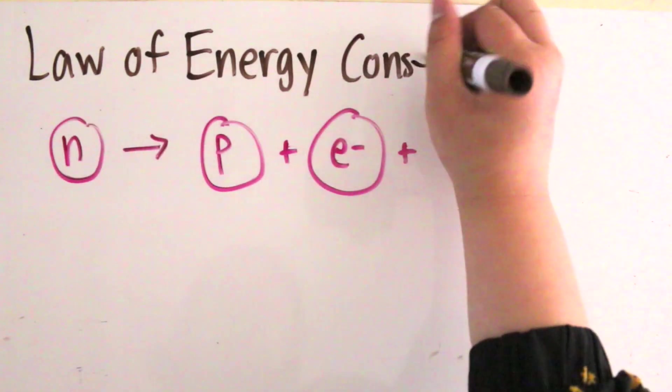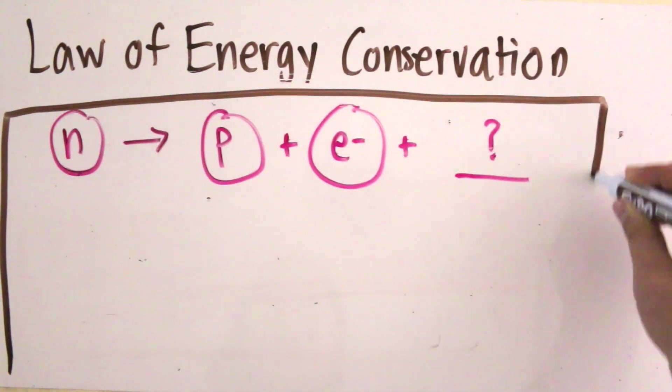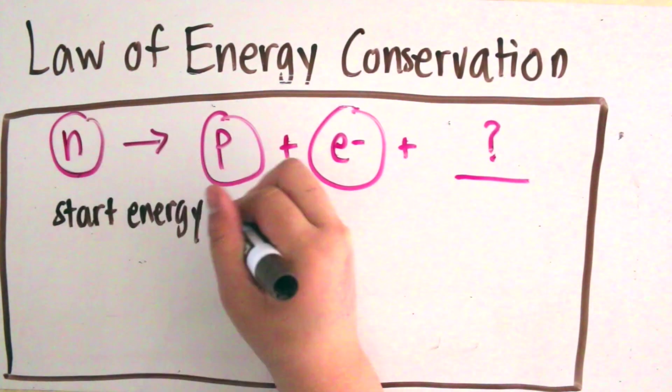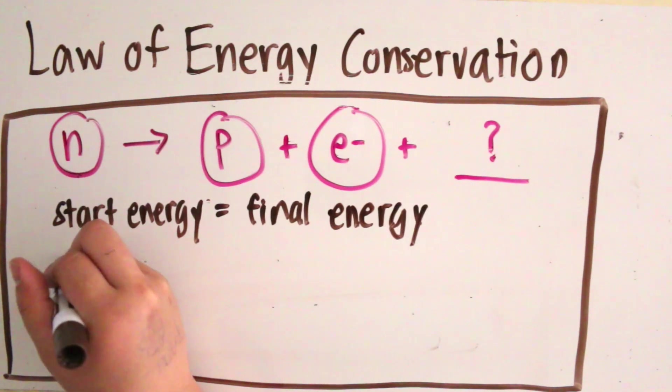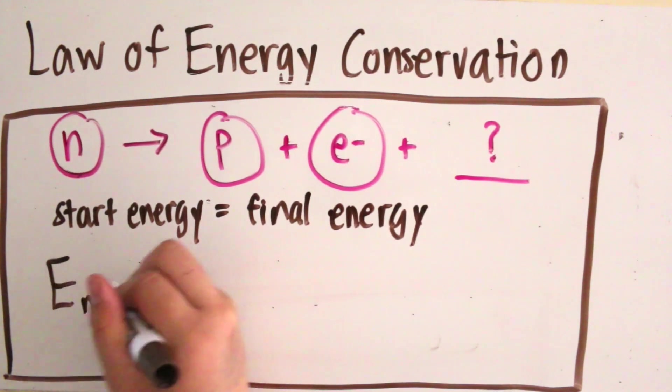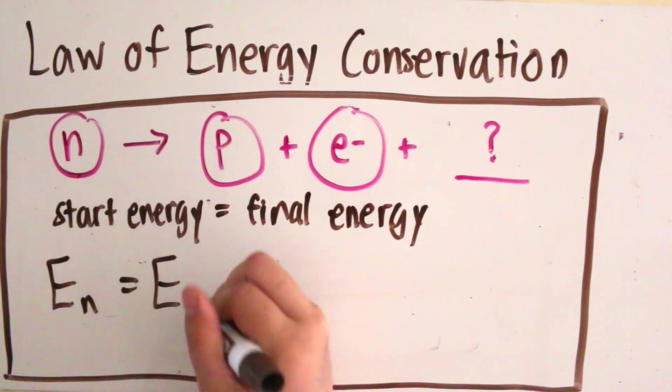According to the law of conservation of energy, the amount of energy within a closed system must be conserved unless an outside force changes that. This means that the energy of the neutron must equal the sum of the products after decaying.